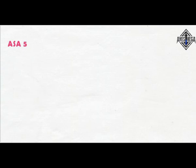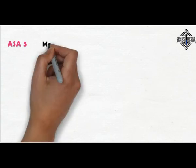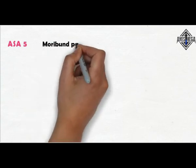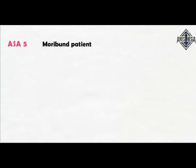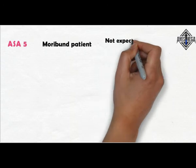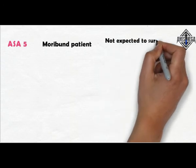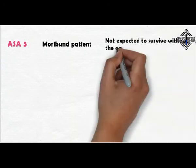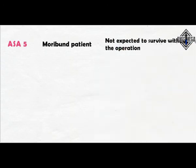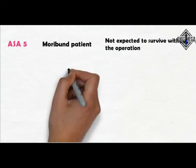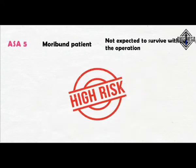ASA 5 — Moribund patient not expected to survive without the operation. Examples include: ruptured abdominal or thoracic aneurysm, massive trauma, intracranial bleed with mass effect, ischemic bowel with cardiac pathology, or multiple organ system dysfunction.